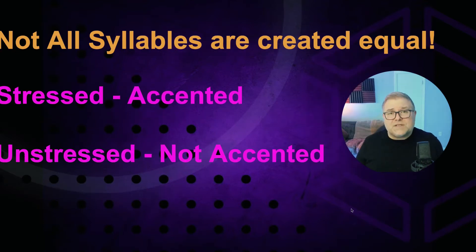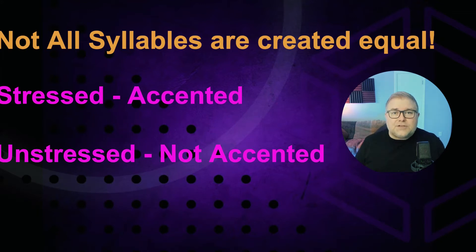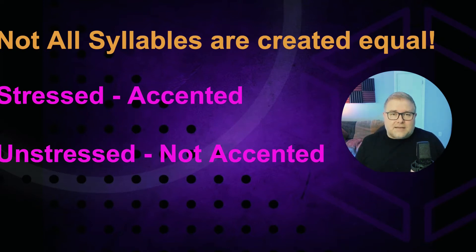Not all syllables are created equal. There are two types of syllable: the first is a stressed or accented syllable, and the second is an unstressed or unaccented syllable. Language uses stressed and unstressed syllables to make it easier to understand, and to make the rhythm of speech flow so it's easier for our minds to remember and process what people are saying. We speak in rhythms that our minds recognize as communication.